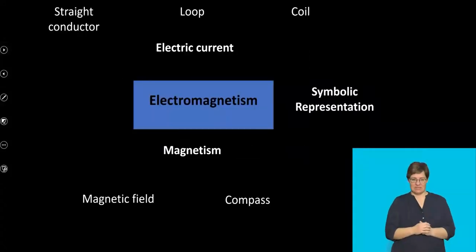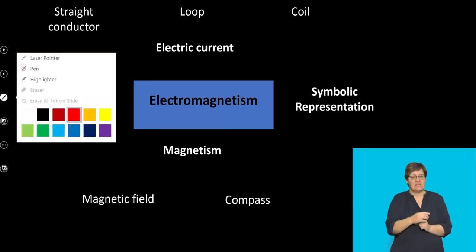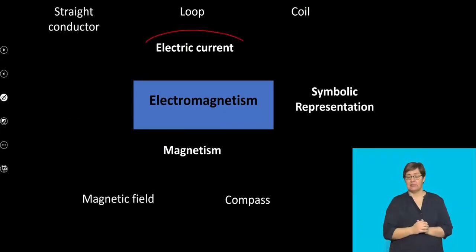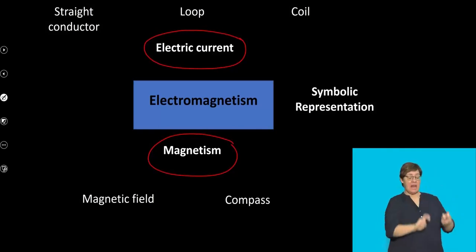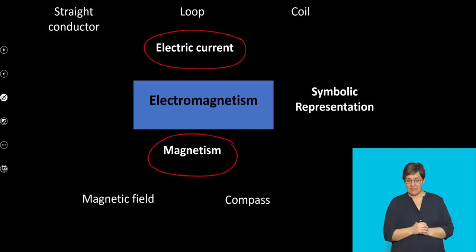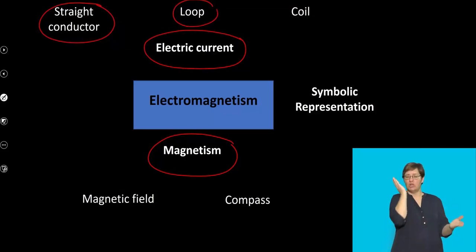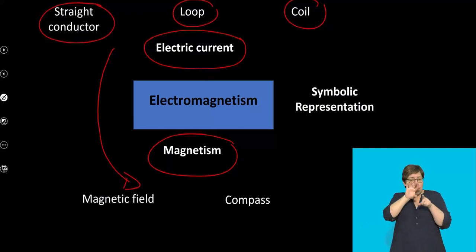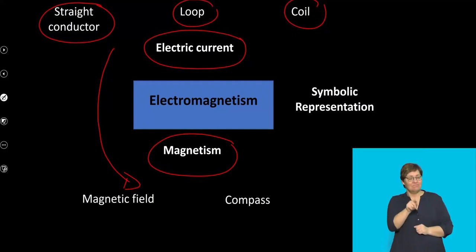Electromagnetism deals with an important idea — the relationship between electric current and magnetism. We recognize that when you have an electric current, whether it be in a straight conductor, a loop, or even a coil, it can produce a magnetic field. That's the first relationship we're going to look at.